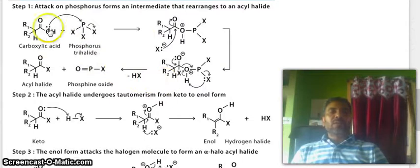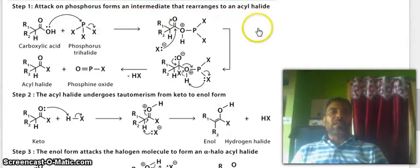This is the mechanism. Step 1, attack on phosphorus forms an intermediate that rearranges to an acyl halide.